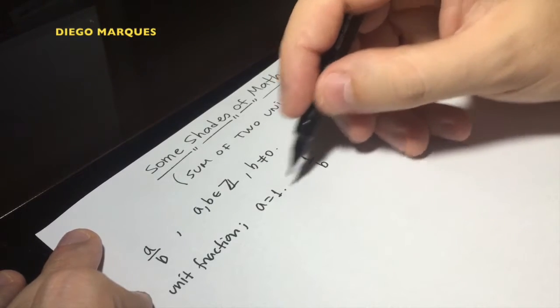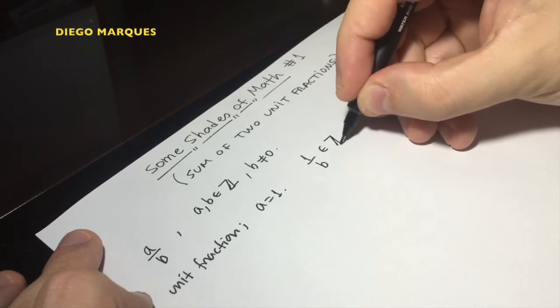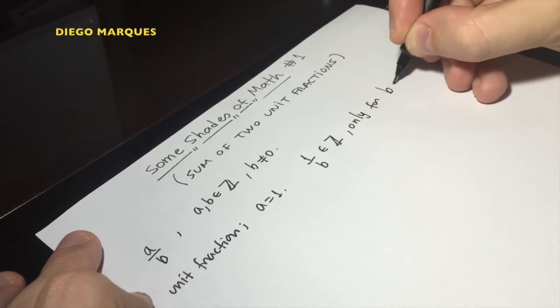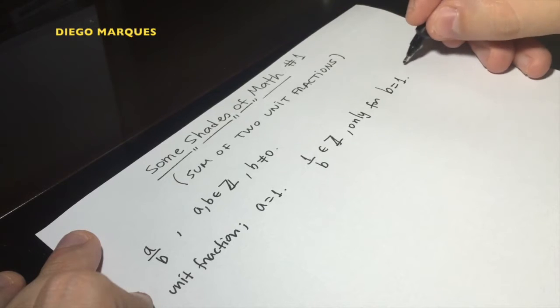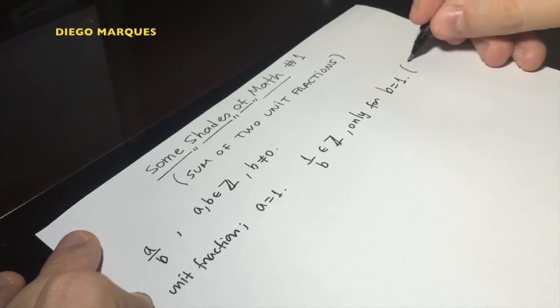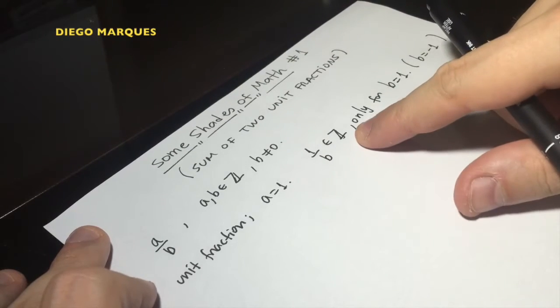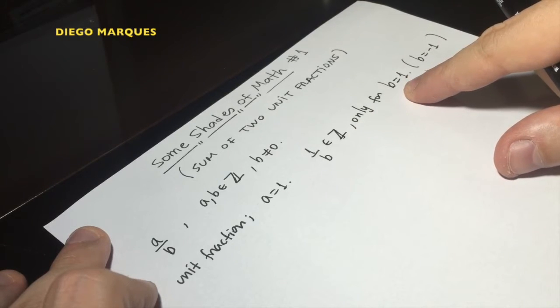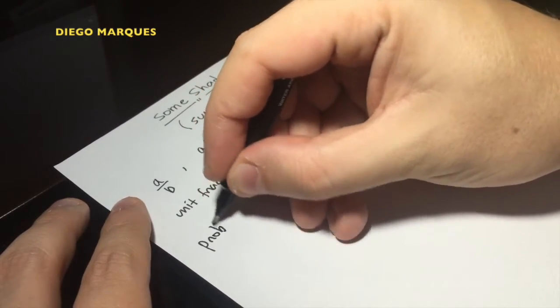So it's a fraction of the form 1 over b. If we are considering only positive integers, 1 over b is an integer only for b equal to 1, only for b positive. If b could be negative, b could be minus 1 too.